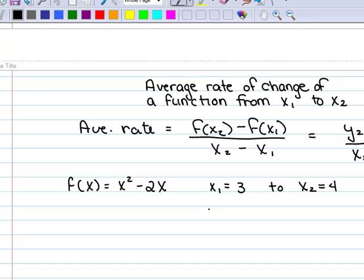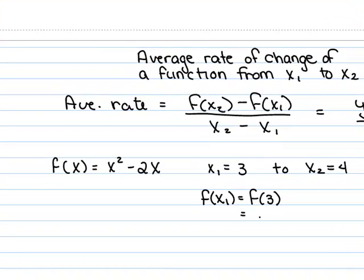Now before you can use this formula, you also need to compute f of x sub 1, which in our case is f of 3. You plug the number 3 into the formula. So it's 3 squared minus 2 times 3. And then use order of operations to compute. So 9 minus 6 turns out to be 3.